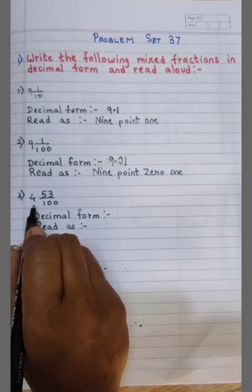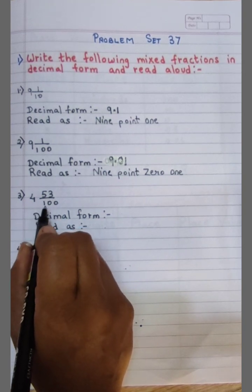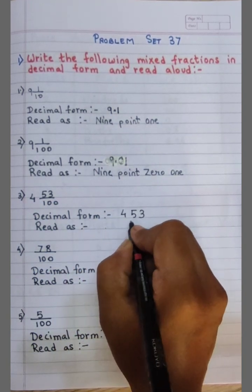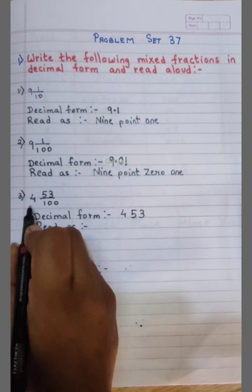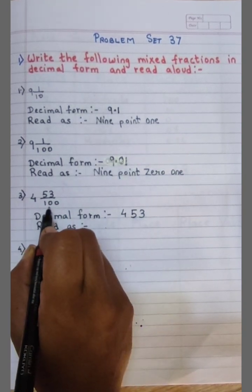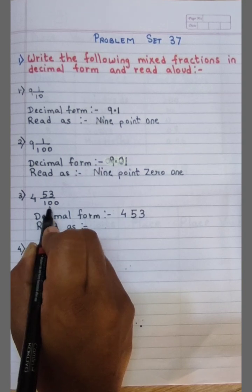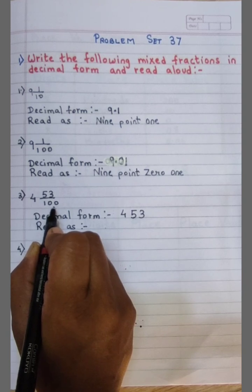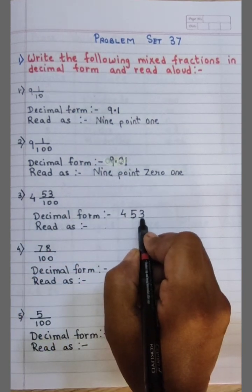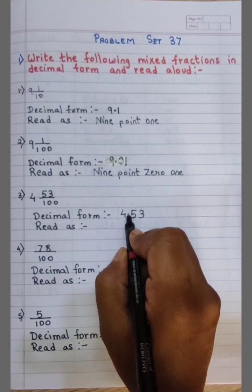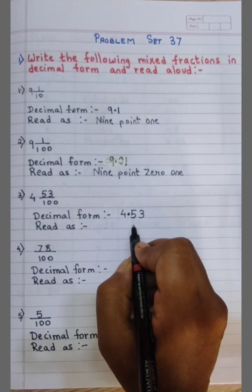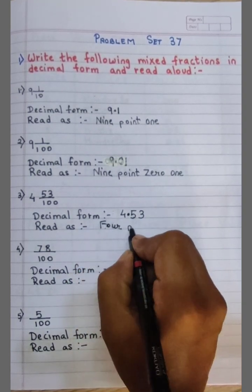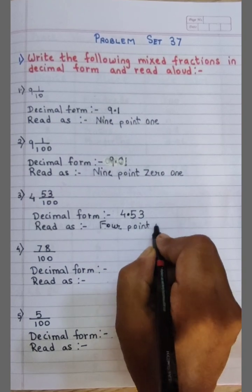Next example: 4 and 53 upon 100. I keep the whole number 4 as it is. The denominator is 100, meaning 2 zeros, so I place the decimal point before 2 digits — that is before 5 and 3. I read this decimal form as 4.53.